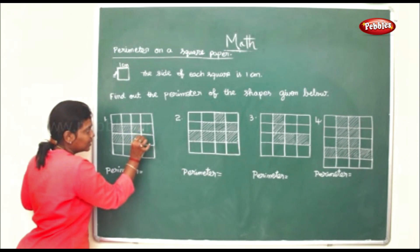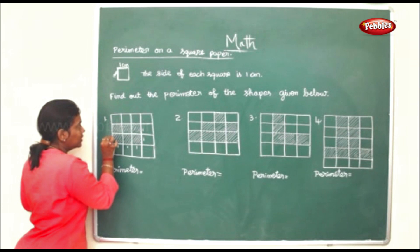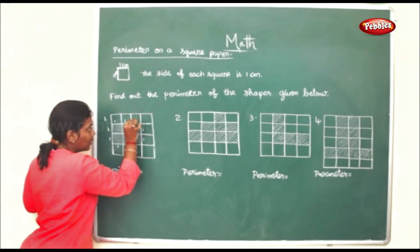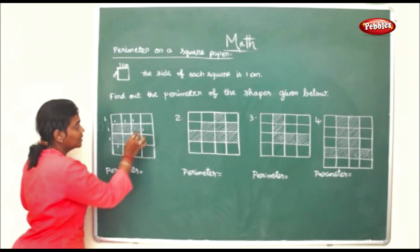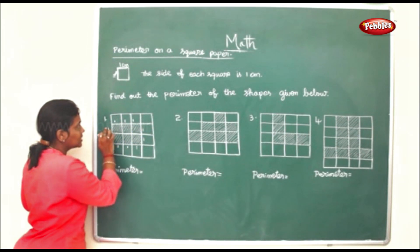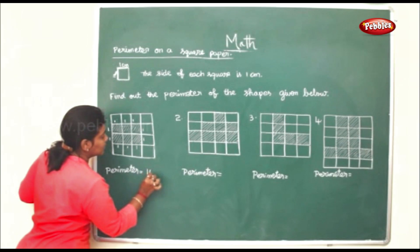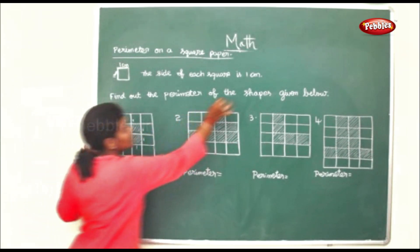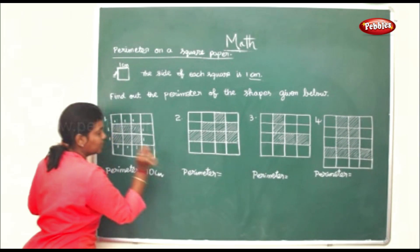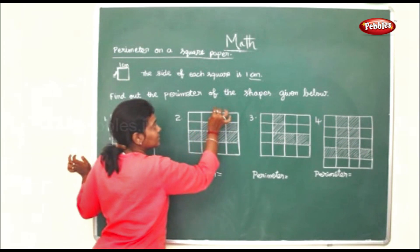Counting the sides of the first shape, each unit side is 1 cm. Counting: 1, 2, 3, 4, 5, 6, 7, 8, 9, 10 — all the sides are counted. So the perimeter is 10 cm, represented as CM.